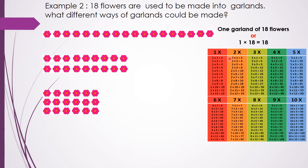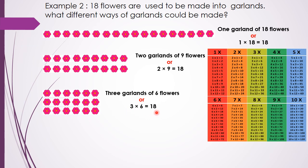In the 2 times table, 2 nines are 18, which means we can make 2 garlands of 9 flowers each. In the 3 times table, 3 sixes are 18, which means 3 garlands of 6 flowers each can be made.